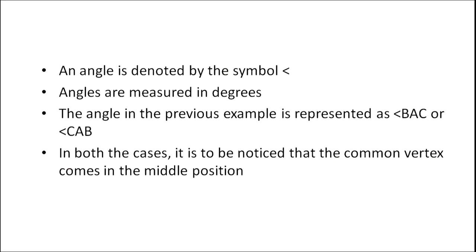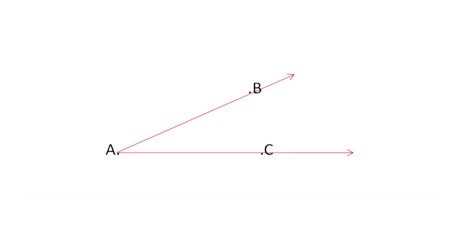It is very important to observe the arms of the angle and to find out the vertex of the angle. Angles can be denoted by the symbol as shown, and angles are measured in degrees. The angle in the previous example can be represented in two ways — either as angle B, A, C or angle C, A, B. In both cases, it is to be noticed that the common vertex comes in the middle position.